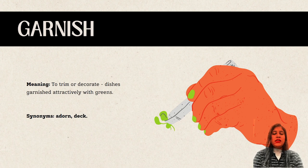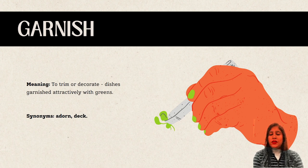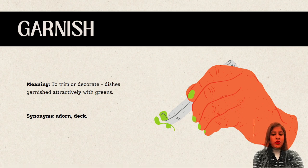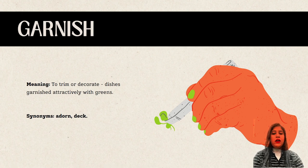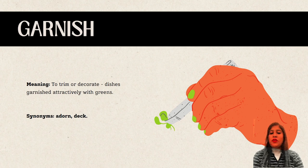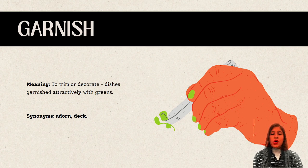Next we have 'garnish'. Garnish means to trim or decorate something. Example: 'This is garnished attractively with greens.' Synonyms would be adorn and decked.